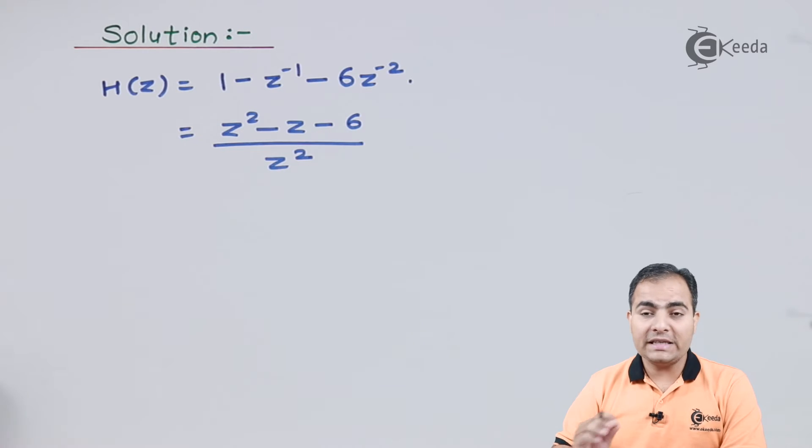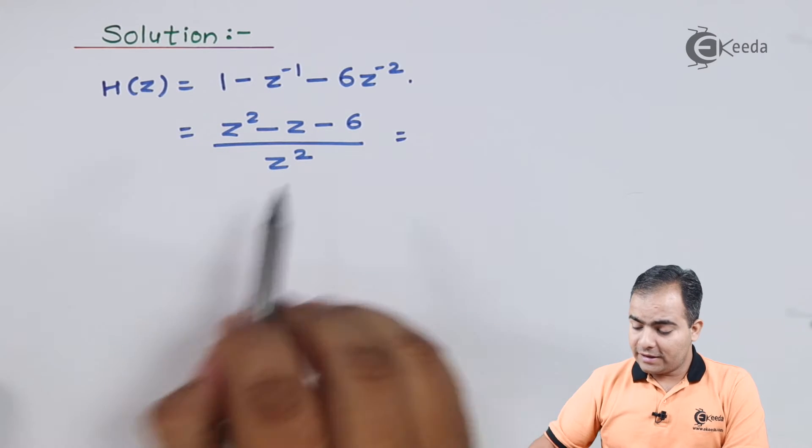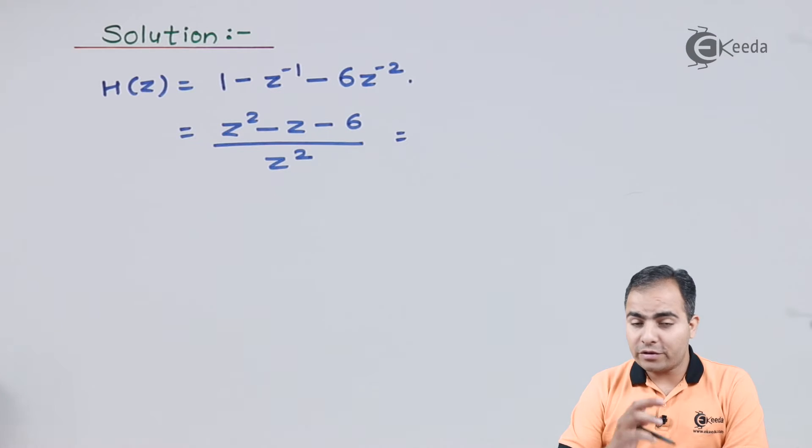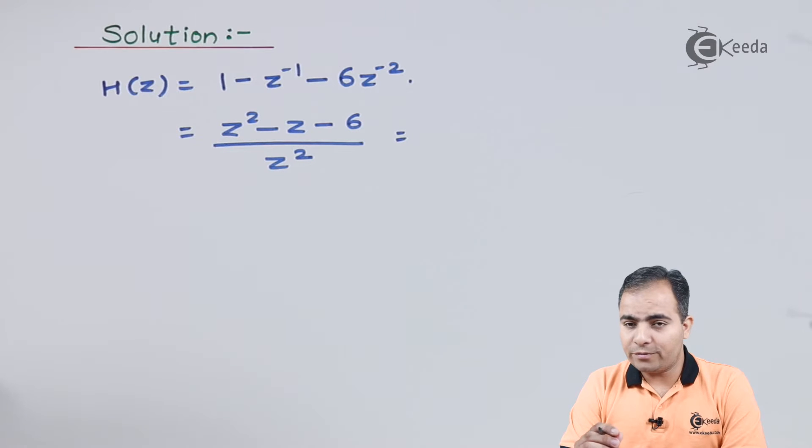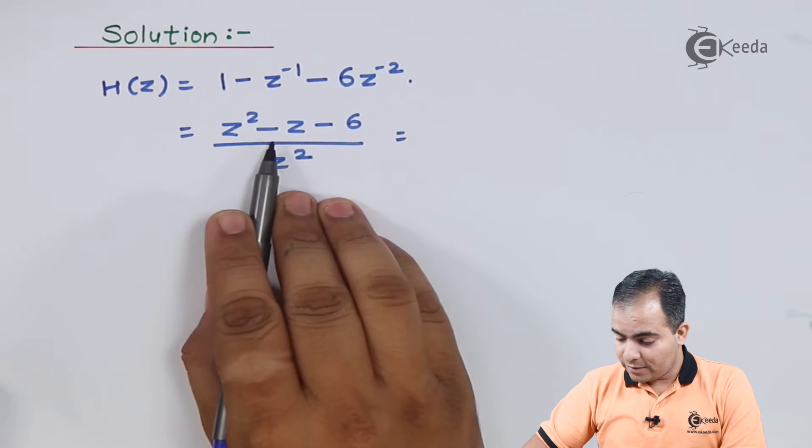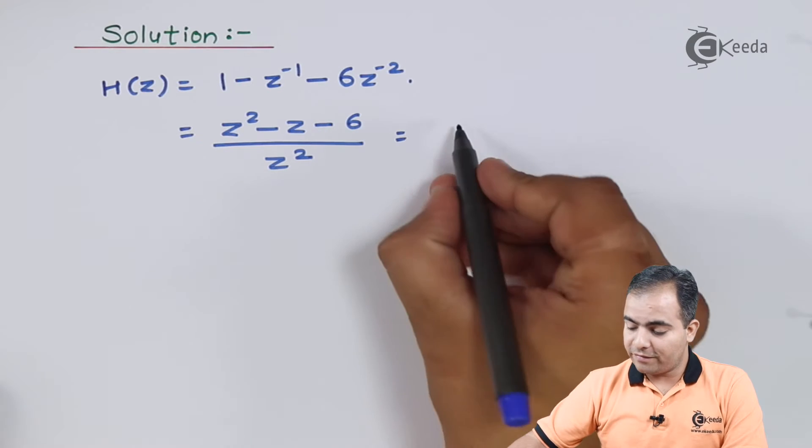Now we will find out the factors. The last term is always product of two digits, whereas mid-term is always addition of two digits. If my terms are 3 and 2, then the product is 6. I'll consider minus 3 and 2 as the factors. Minus 3 times 2 is minus 6, and minus 3 plus 2 is minus 1, which means my factors are correct: (z minus 3)(z plus 2) over z square.